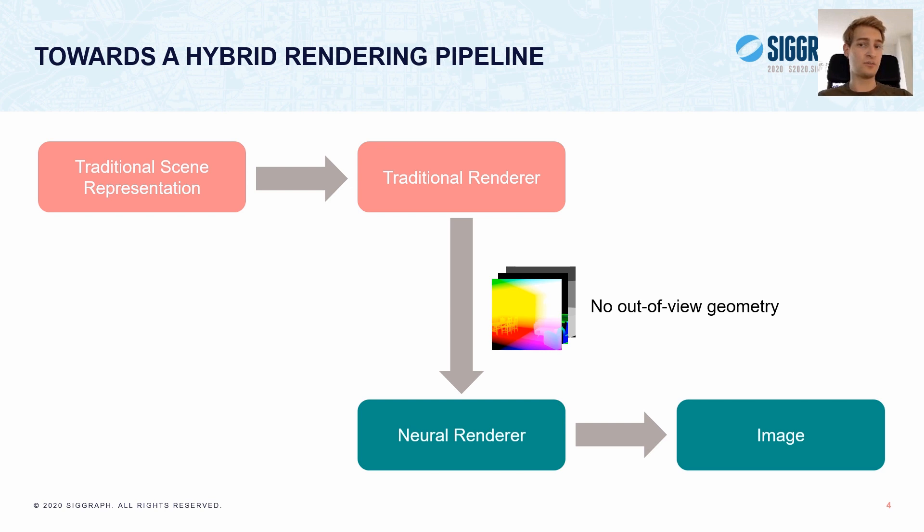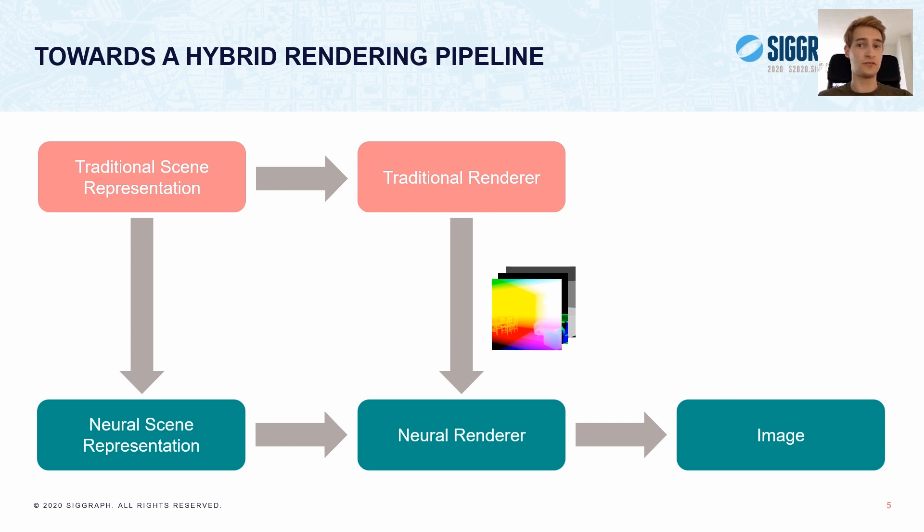A notable paper here is deep shading by Nalba and colleagues. Unfortunately, these models cannot synthesize lighting effects caused by objects outside the camera view. So to overcome this problem, we utilize a neural scene representation, which is input into the neural renderer to fill in information missing from the gbuffer.